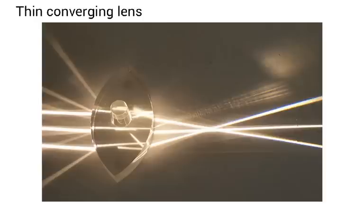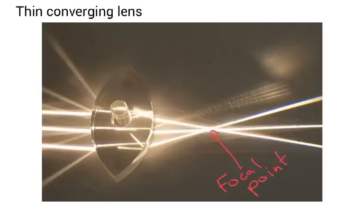Next I want to talk about the thin converging lens. Here you can see lines of parallel light entering the lens — they pass through and end up at a point called the focal point. The distance from the lens to the focal point is called the focal length.